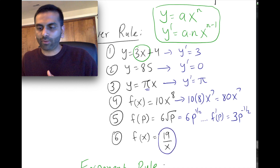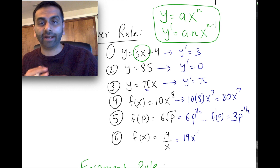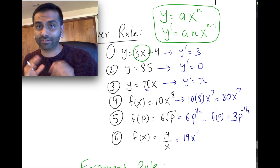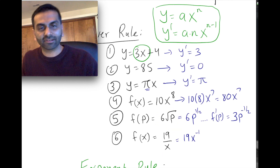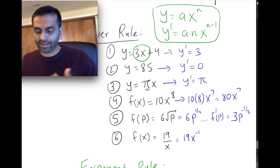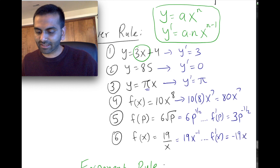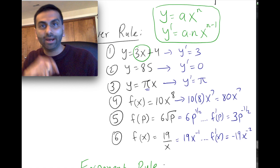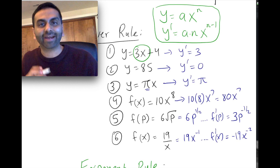Similarly, 19/x can be rewritten as 19x to the negative 1. So the power rule is actually very broad — it applies to functions with radicals or x in the denominator. Taking the derivative: bring the negative 1 down to get negative 19, then x to the (negative 1 minus 1) = x to the negative 2. So the derivative is negative 19x to the negative 2, or equivalently negative 19 over x squared.